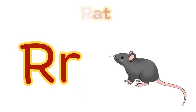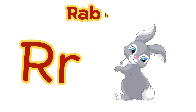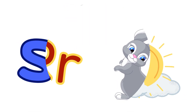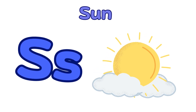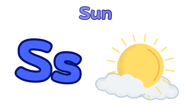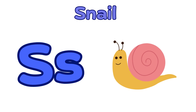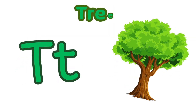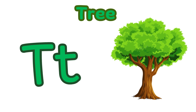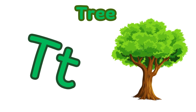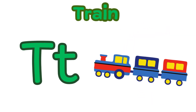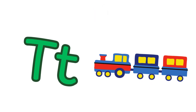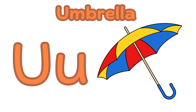Q is for whale. R is for rat. R, r, r — rat. R is for rabbit. R, r, r — rabbit. S is for sun. S, s, s — sun. T is for train. T, t, t — train.